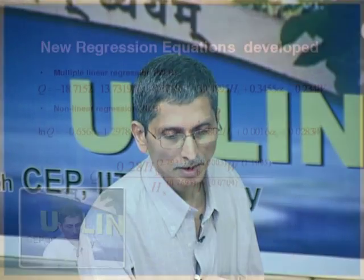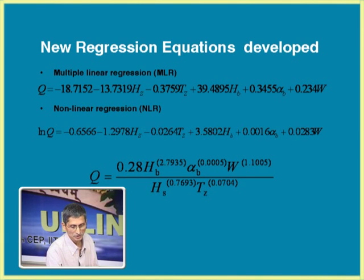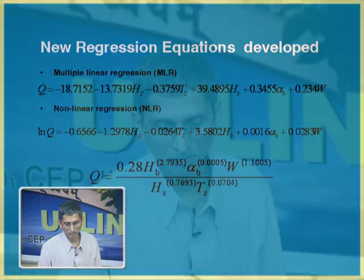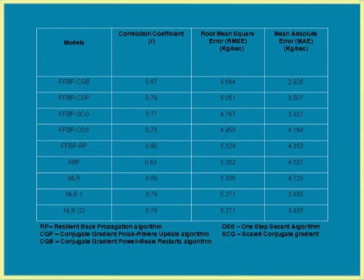Then, based on the data set that we newly obtained, we also fitted some regression equations. When we compared all these results, we found that by manipulating the networks properly, we can get a good network having fairly good performance criteria — correlation coefficient, root mean square error, and mean absolute error — compared to multiple linear regression and non-linear regression of different types. Within the neural network itself, certain training schemes can give you even much better results. But again, there is no guarantee that use of some particular network will always give you a better result. You have to try out all training schemes and network architectures.